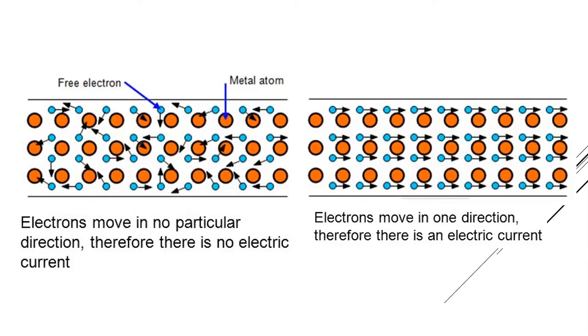So, you said free electrons are there. From where do these electrons come? These electrons basically belong to the atoms, right? But the hold of atoms is not very strong on those electrons. So, that's why they are moving freely.